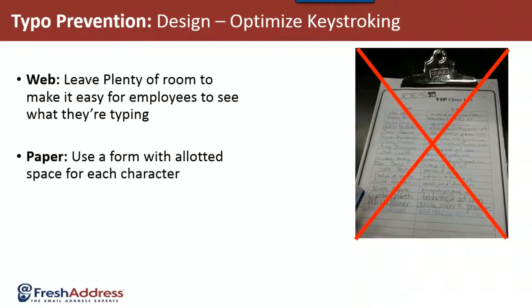If you're having your phone reps or customer service reps collect email addresses, you can train them to verbally confirm the email address that the person on the phone is giving them. You can also move away from Joe's VIP list — the paper list — to an electronic version that's easier to use and easier to read.